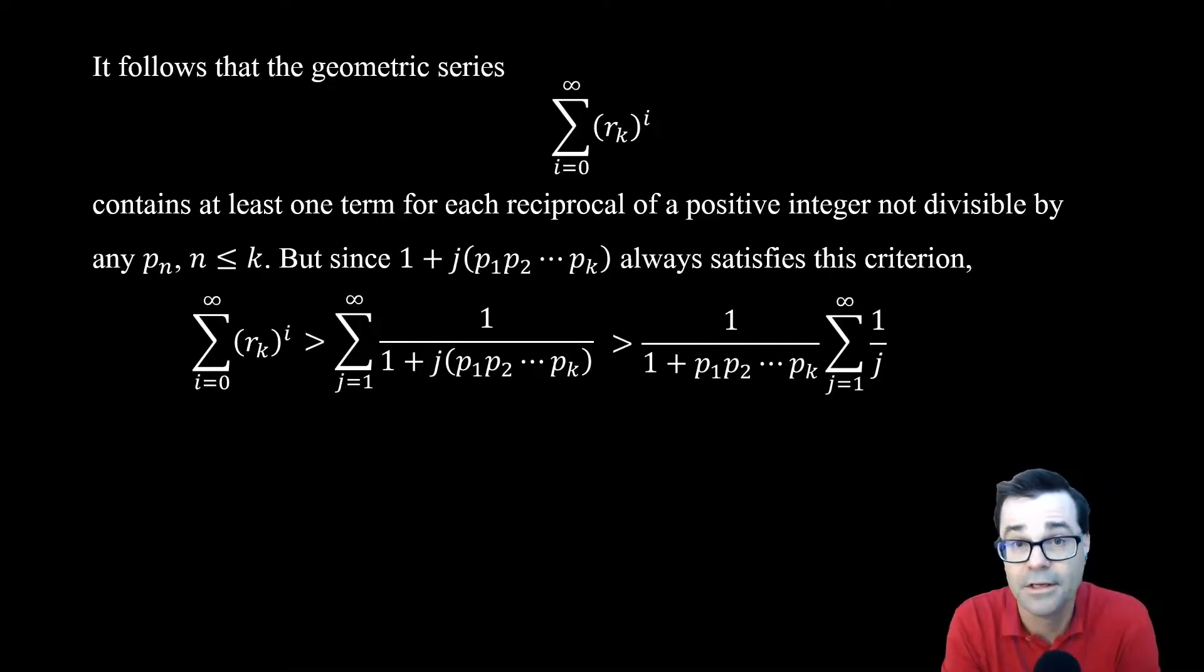By the way, that p1 up to pk, that's called a primordial. So we could say here that we're looking at 1 plus pk primordial. And so now we've got the 1 over j. That's the divergent harmonic series. So that diverges. So by direct comparison, the series all the way on the left, our infinite geometric series there, has to diverge.